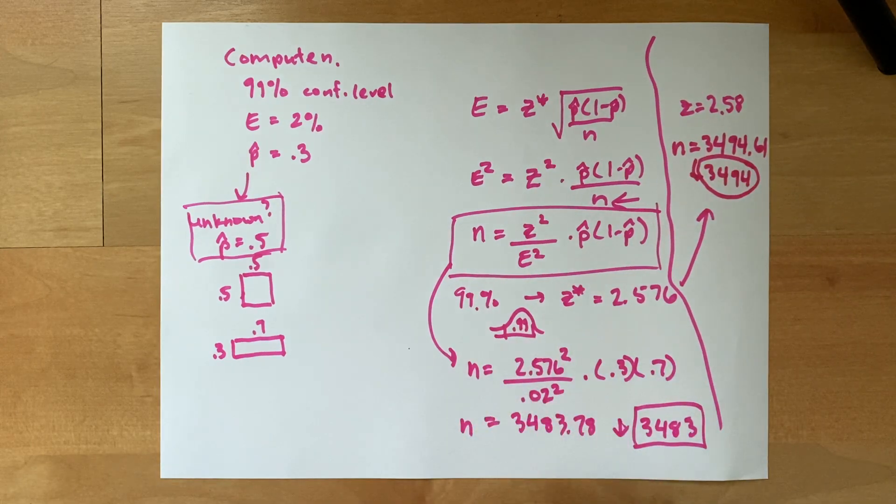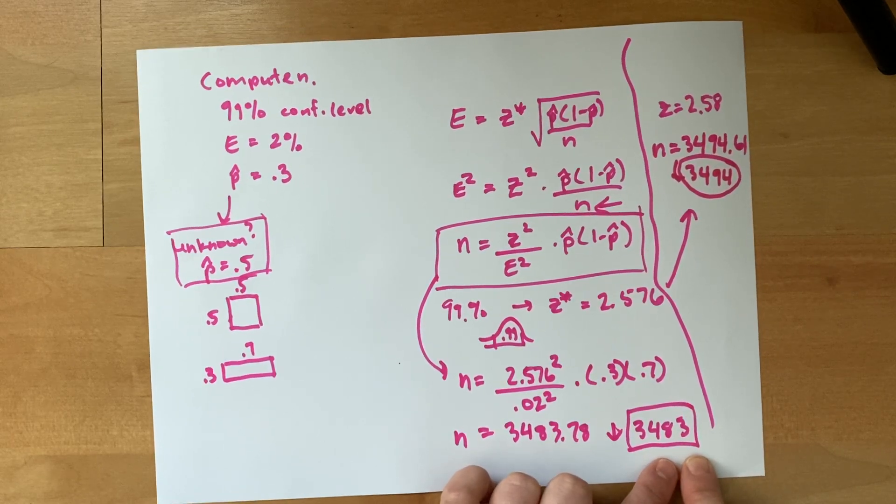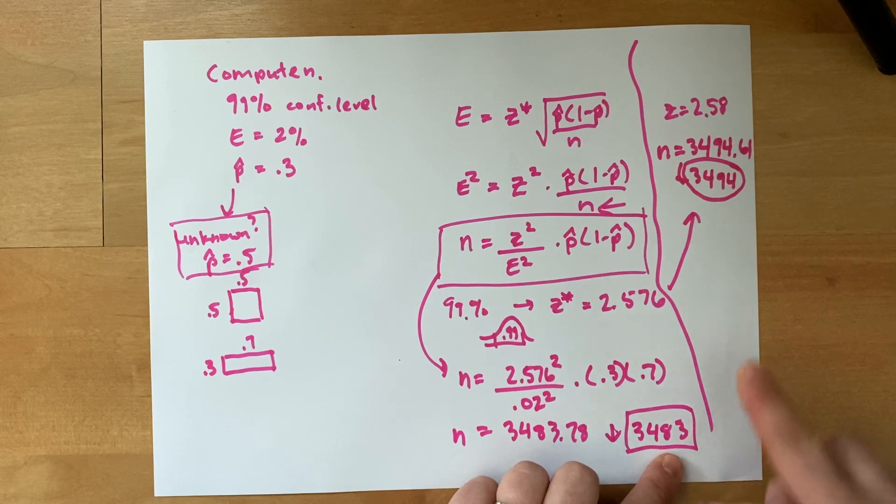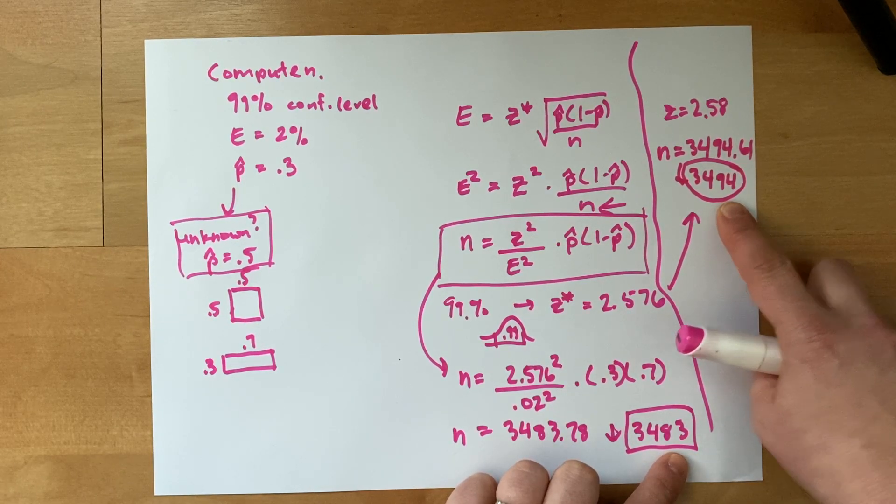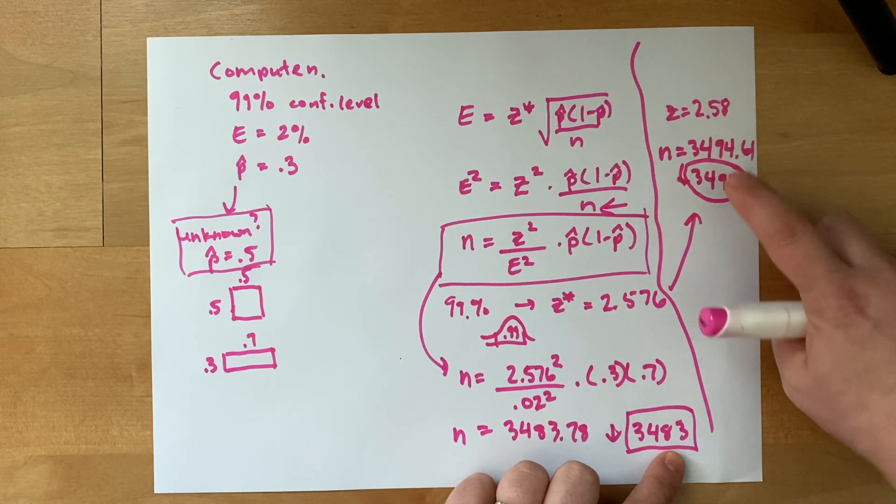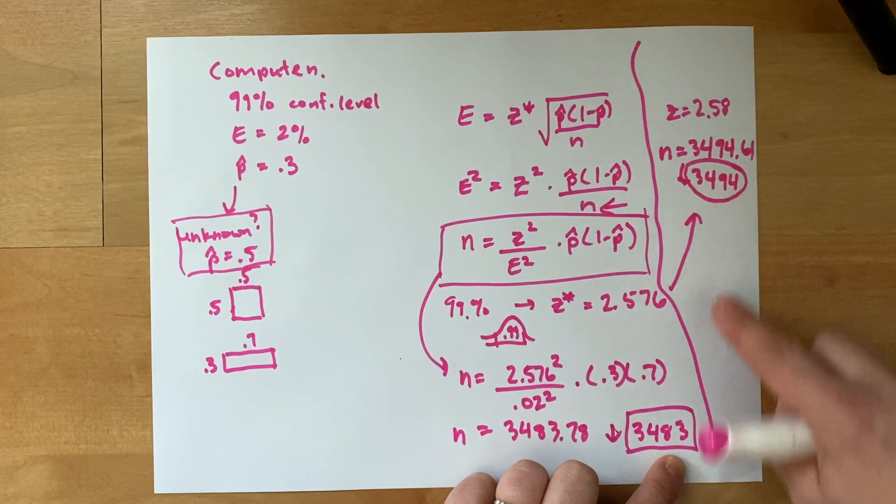So check this out. You'd need 3,483 people in your sample when z is written out to three decimal places. You'd need 3,494 people, so more people, when you round it out to two decimal places. So if you put these answers into, let's say, your online homework system, you might be marked wrong because, literally, these are different numbers. Even though, relatively, you got the right answer. All you did was round your z score differently.